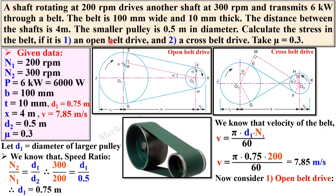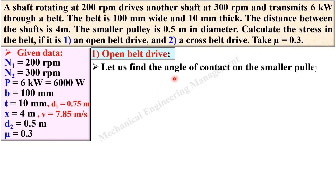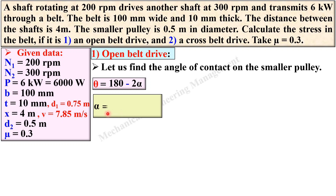Now consider Case 1: Open Belt Drive. We need to find the angle of contact first. In the case of open belt drive, the angle of contact is always taken on the smaller pulley. The formula is θ = 180° − 2α. For cross belt drive it would be θ = 180° + 2α.